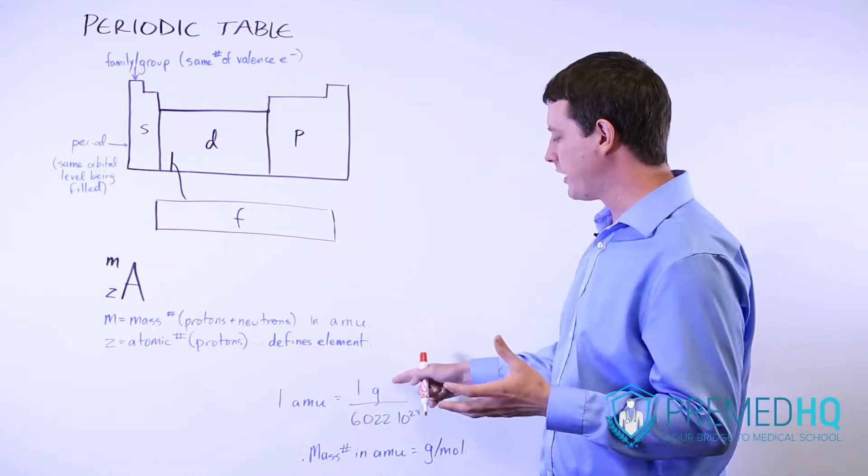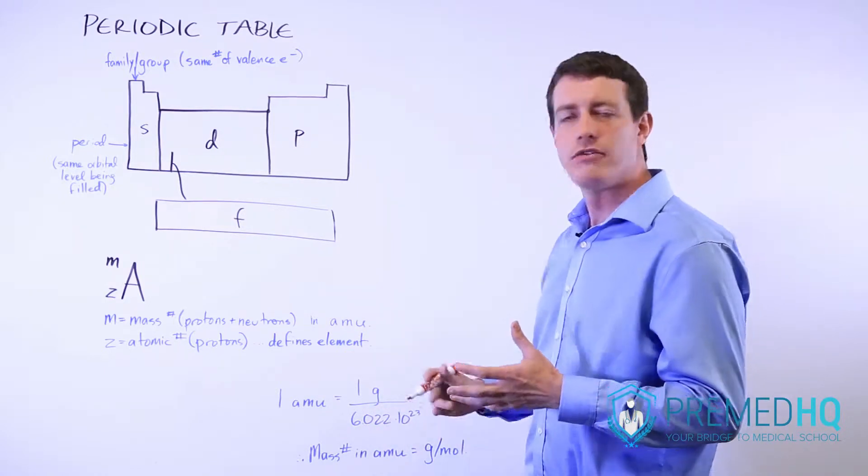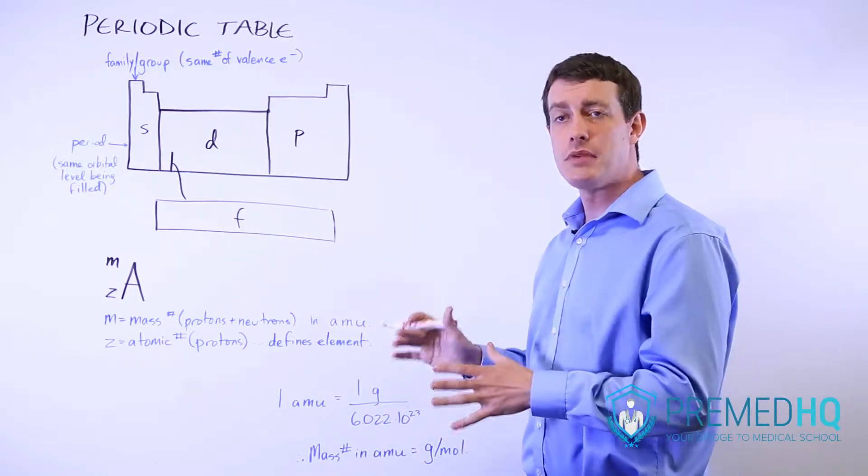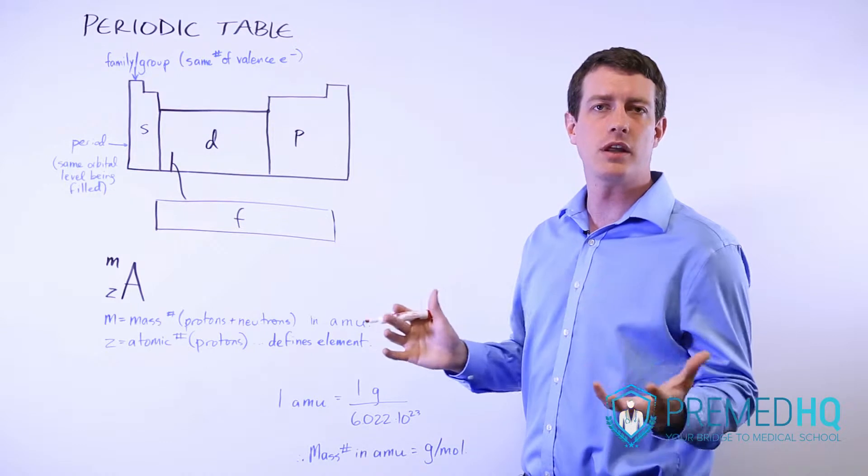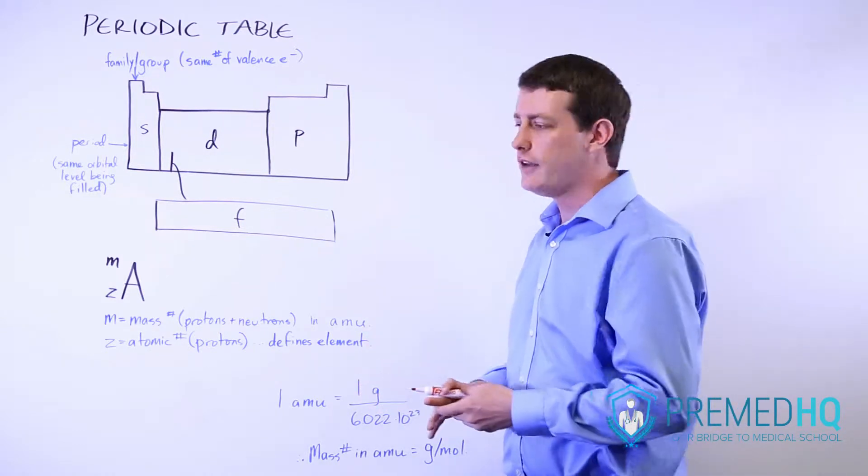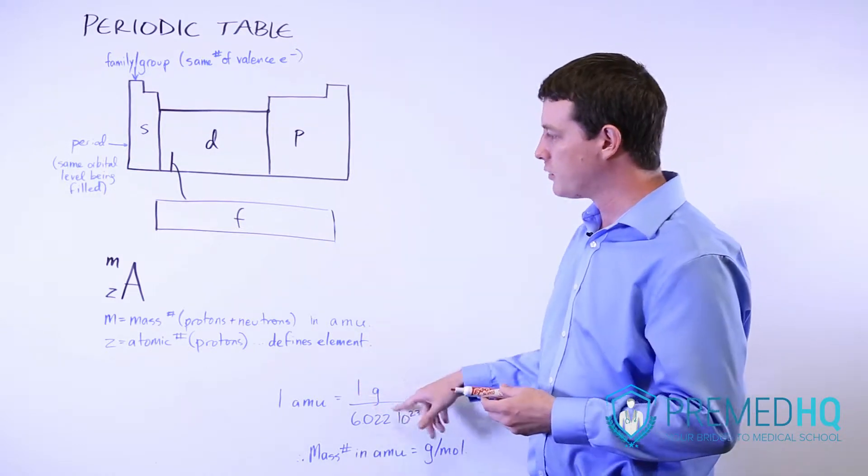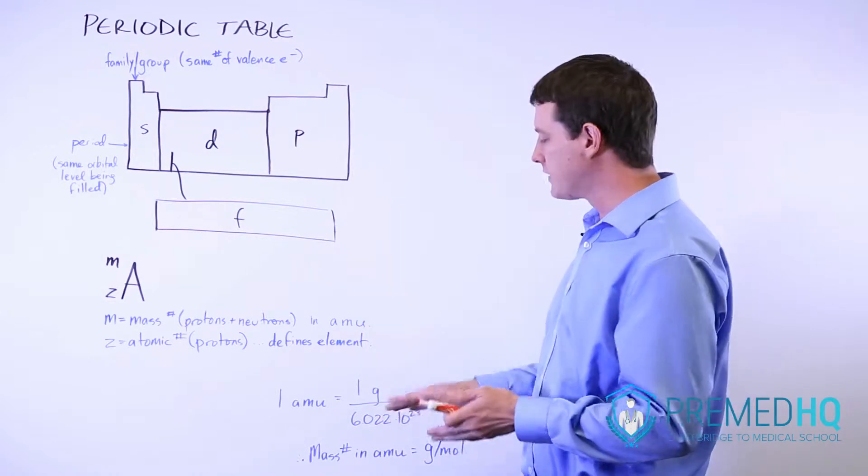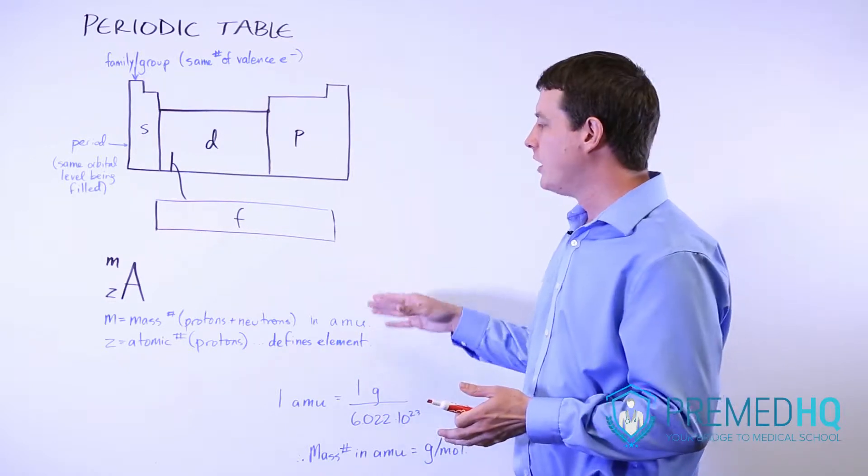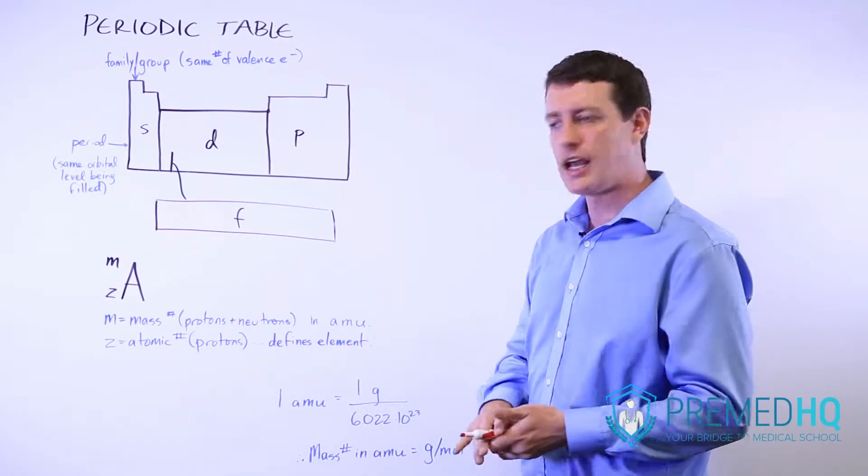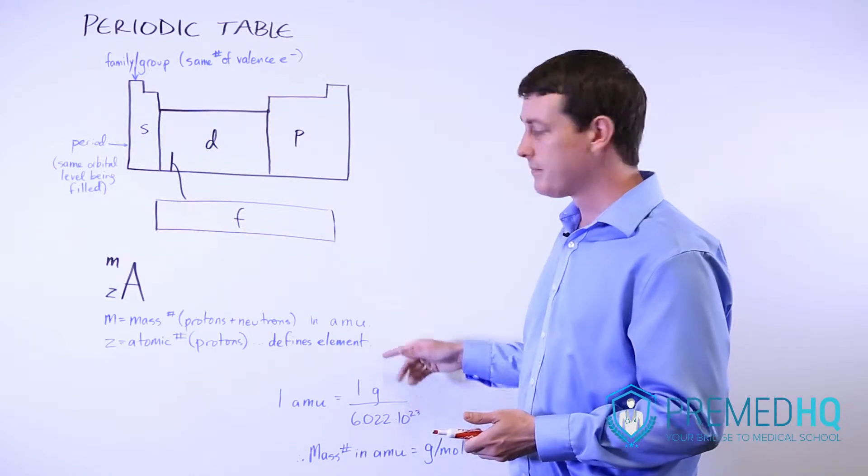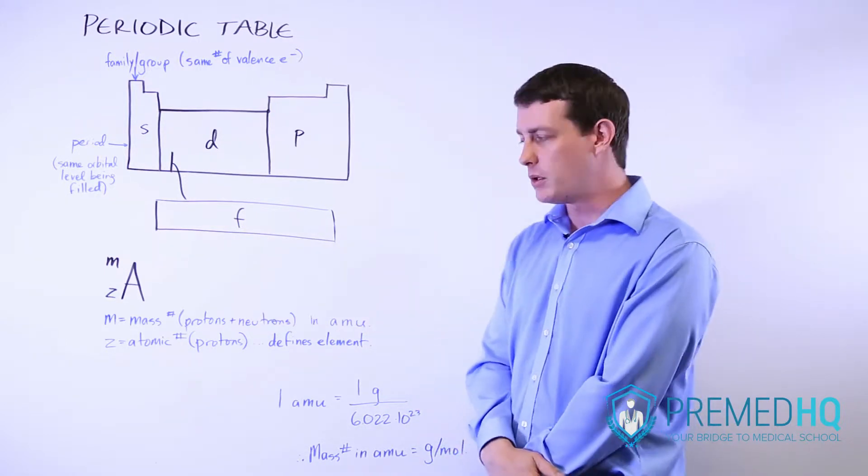One amu is essentially a gram divided by Avogadro's number. What that means is, say that you're working with carbon with an amu of 12. If you have a mole of those carbon atoms then that will have a mass of 12 grams. So any mole of a compound has that many grams that is equal to its mass in amu.